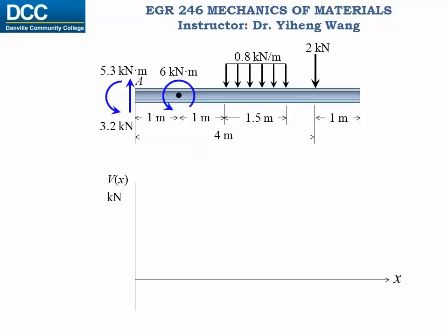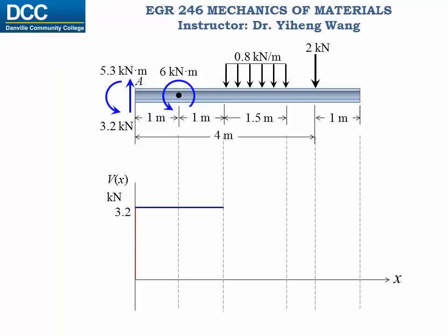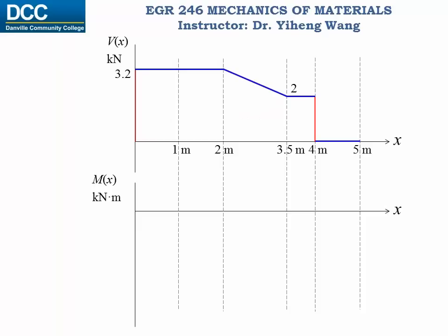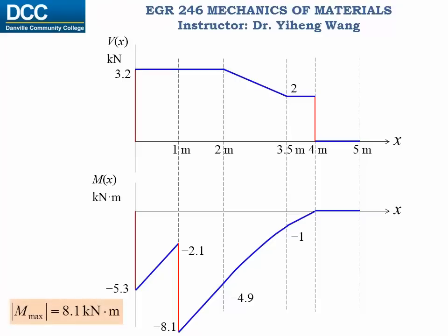We start sketching the shear force diagram: concentrated force, no load intensity, constant negative load intensity, no load intensity, concentrated force, no load intensity. Based on this, we sketch the bending moment diagram following the same rules. The absolute maximum bending moment is 8.1 kilonewton-meters.